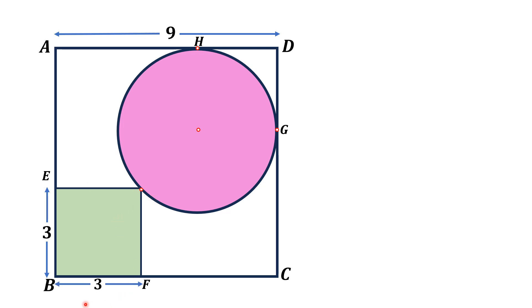Since the side length of the smaller square is 3 units, drawing its diagonal forms a right triangle whose legs are both 3 units. We know that the diagonal of a square is equal to the side length times the square root of two.